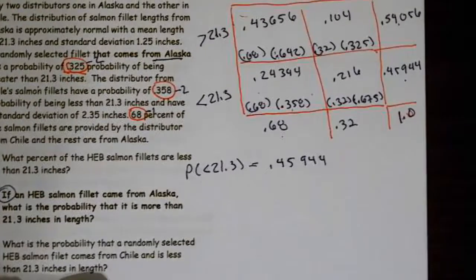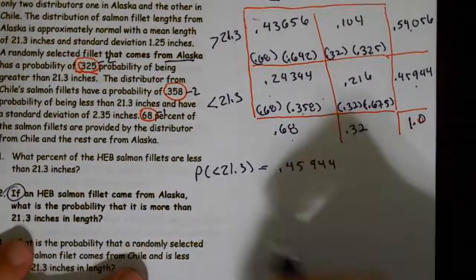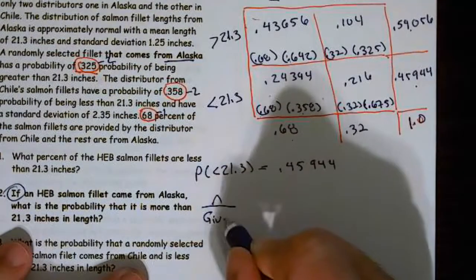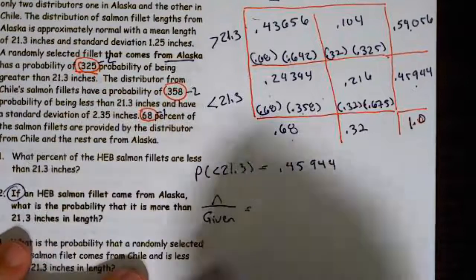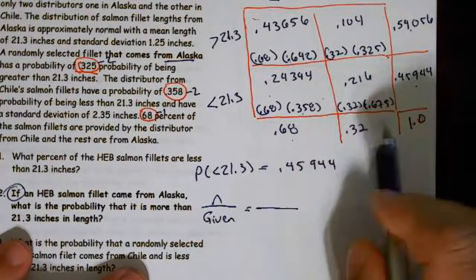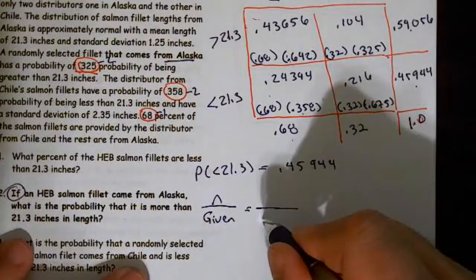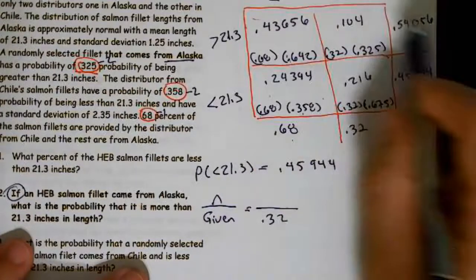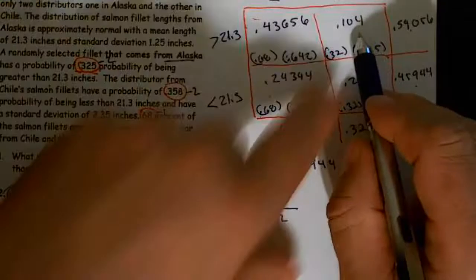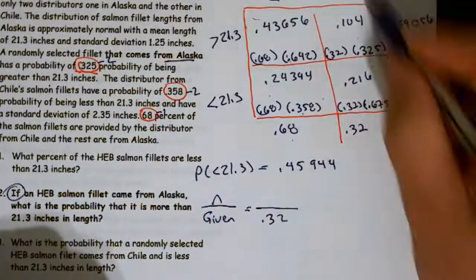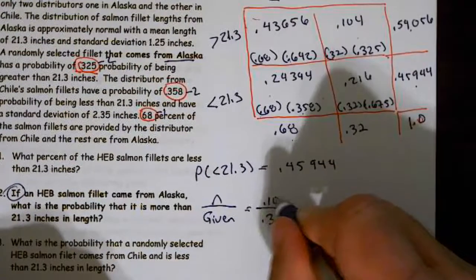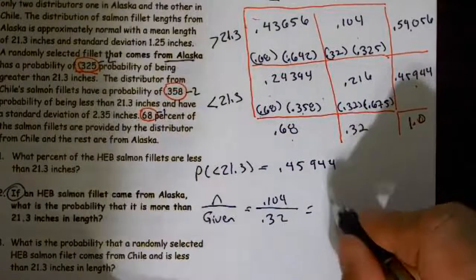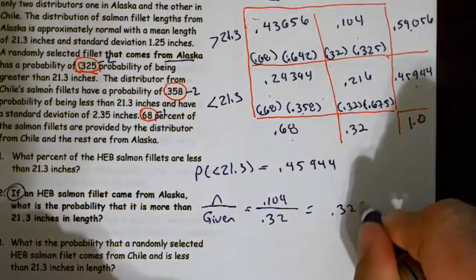If an HEB salmon fillet — this keyword 'if' means 'given' — comes from Alaska. So given that it came from Alaska, what's the probability that it's more than 21.3? Intersection over given. The given is Alaska, which is 0.32. What's the probability that they're greater than 21.3? So this is my intersection: Alaska intersect greater than 21.3 equals 0.104. And then I find that the answer is 0.325.